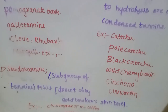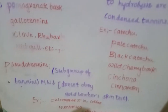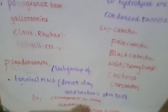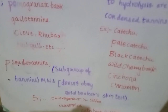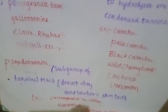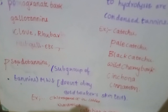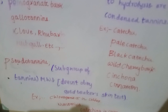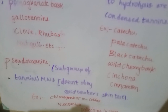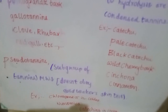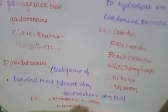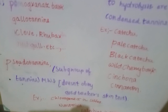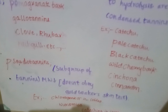The third group is pseudo tannins. 'Pseudo' means false. These are a subgroup of tannins with low molecular weight that do not obey the goldbeater's skin test. Since they do not pass this test, they are called pseudo tannins — only compounds that obey the goldbeater's skin test are considered true tannins.